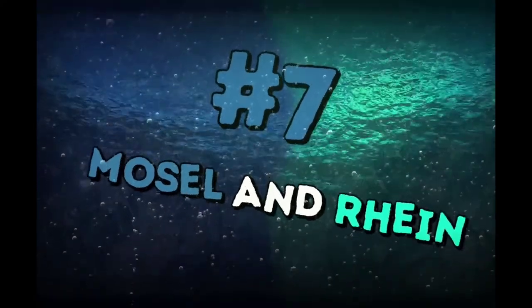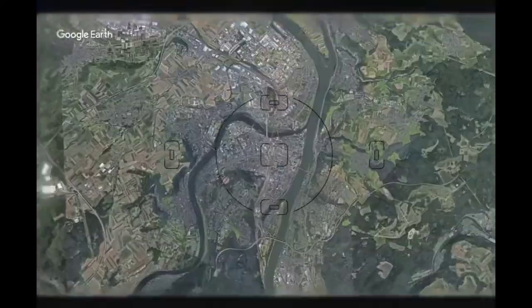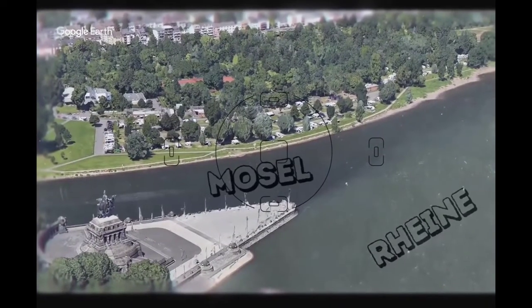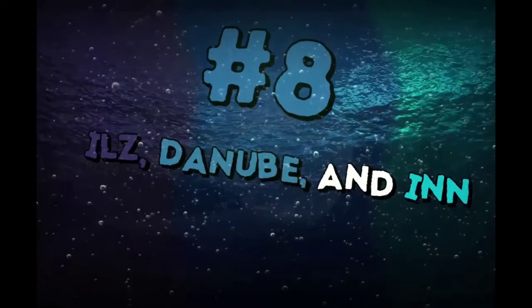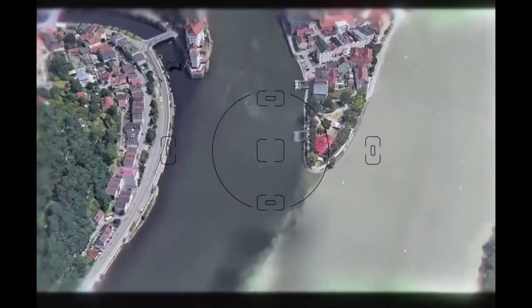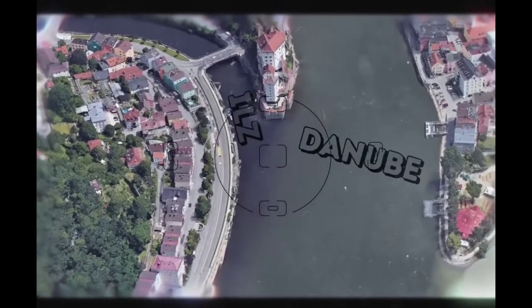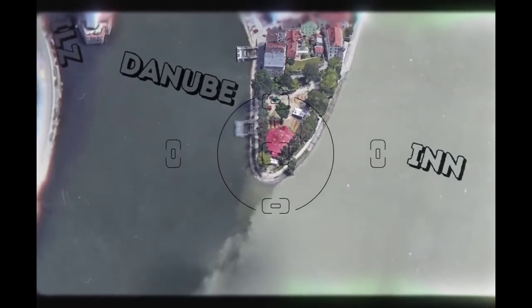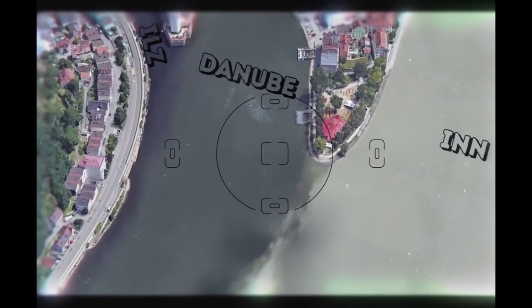Moselle and Rhine meet at Koblenz, Germany. Rhine has lighter water and Moselle darker. Ilse, Danube, and Inn meet in Passau, Germany. Ilse is a small mountain river to the left, the Danube is in the middle, and Inn is the light river to the right. Inn is wider than the Danube here, but still is its Aflux.